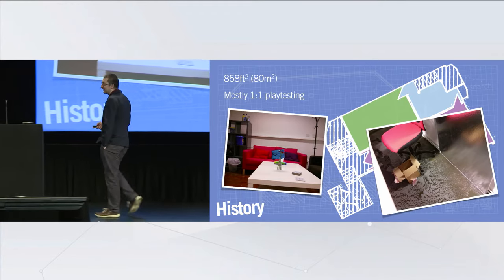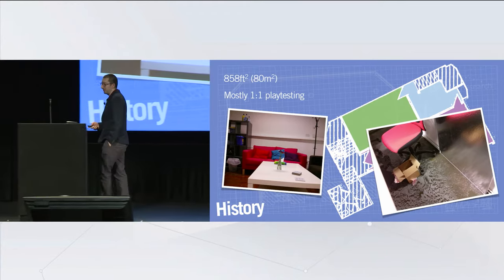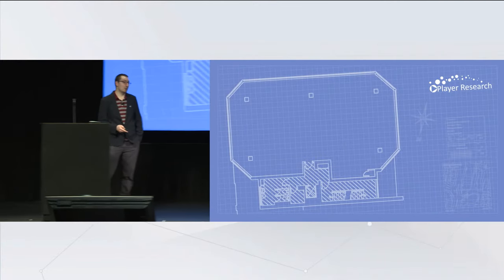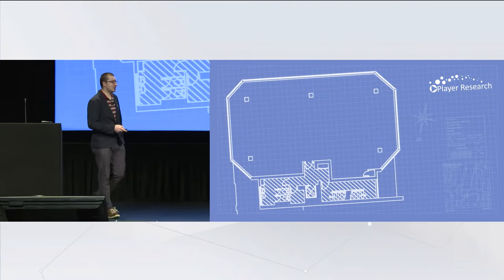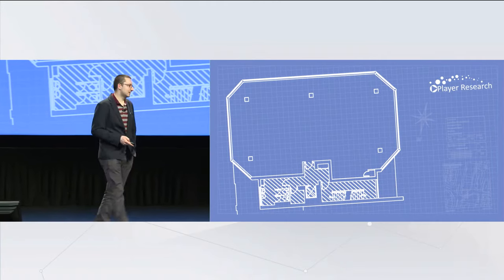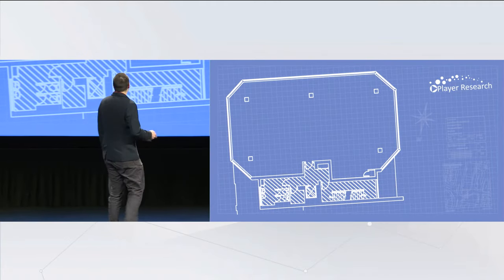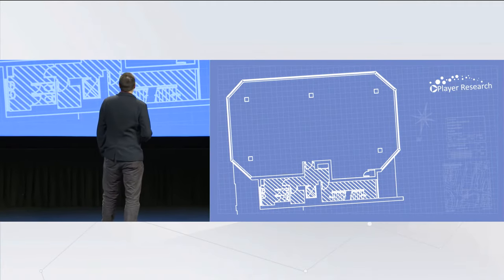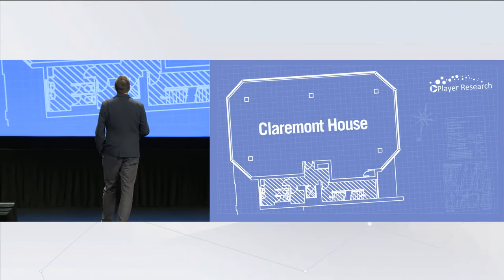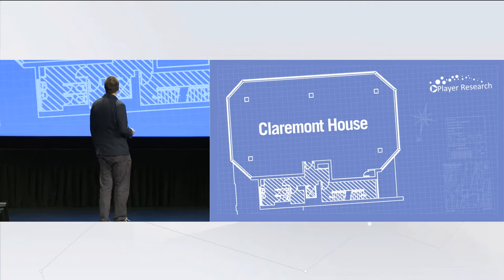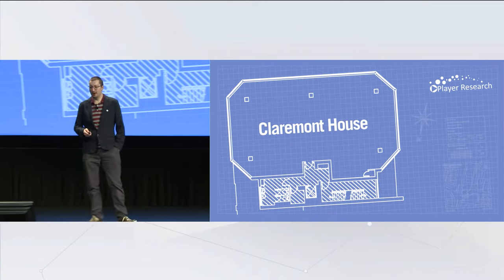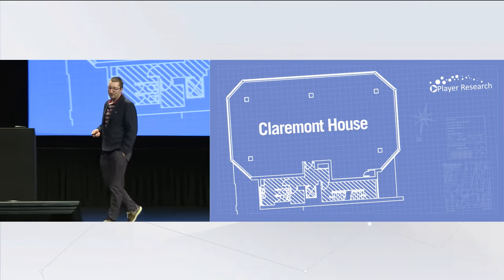Unfortunately it did take us a year to find a place. Number one piece of advice: if you want to move location, start now. It took us over a year to find a new place. But after a year we found Claremont House — 2,000 square feet of open-plan office.